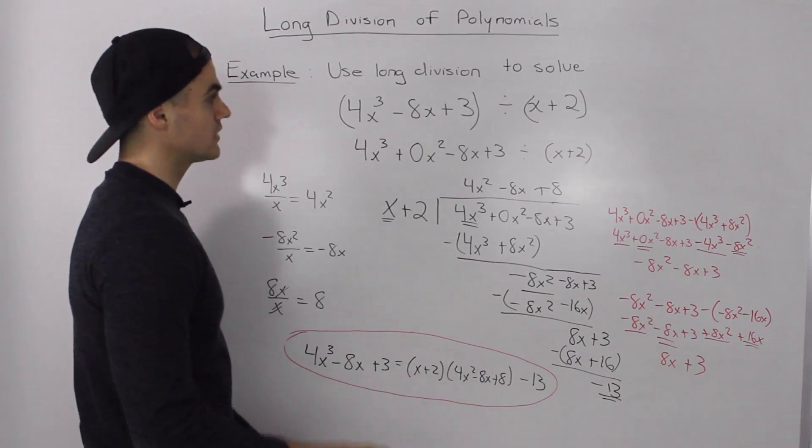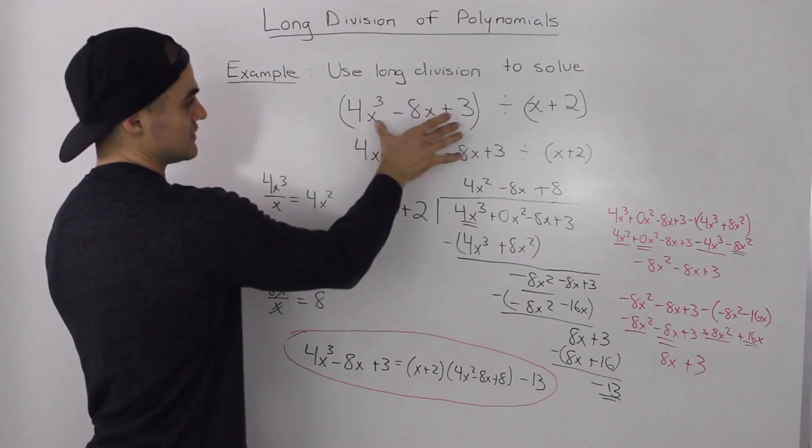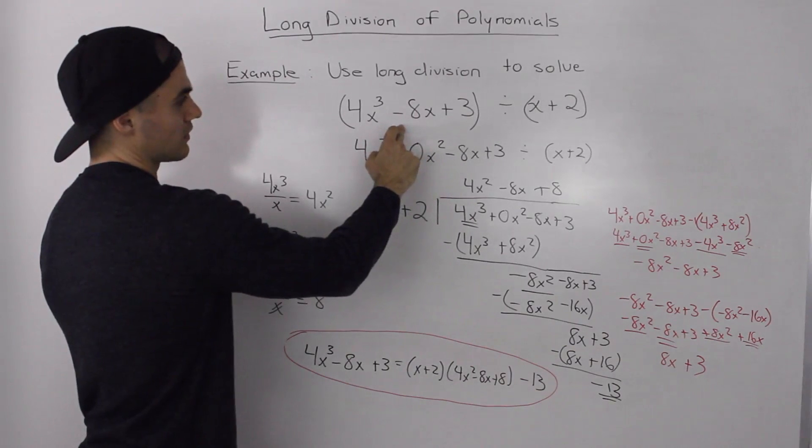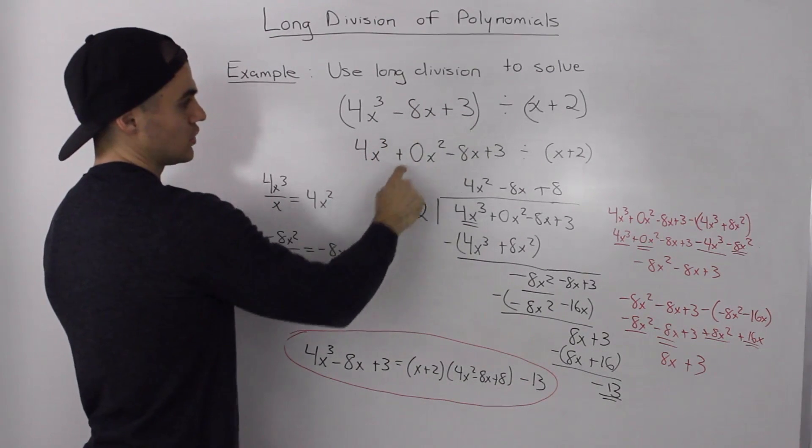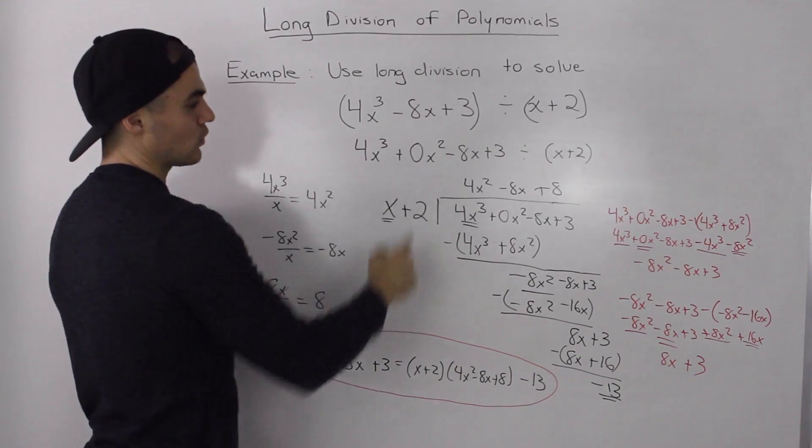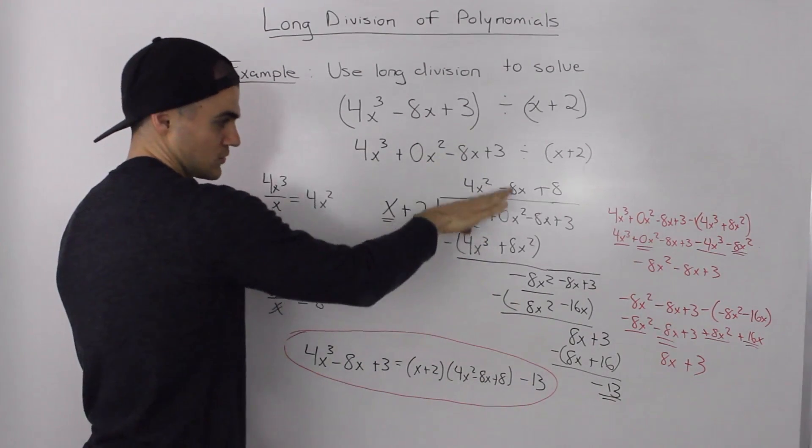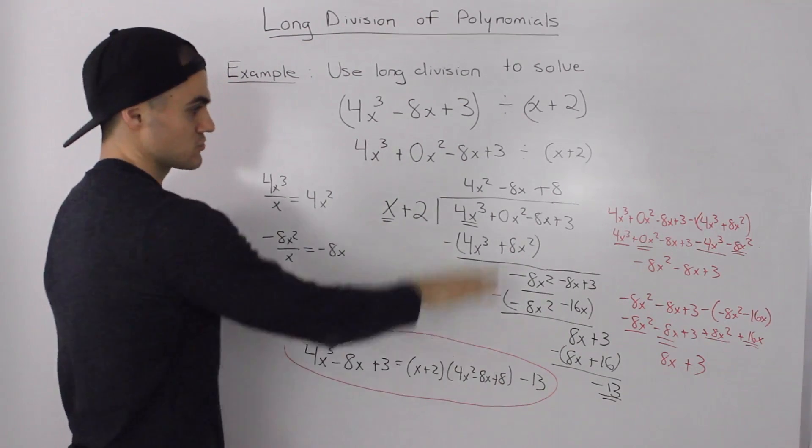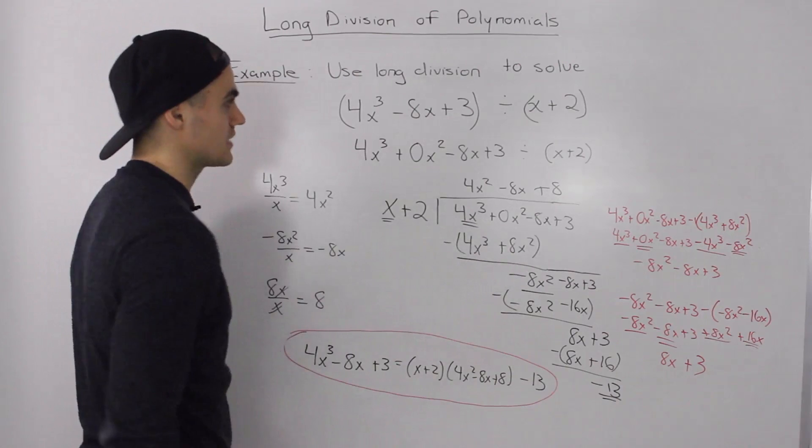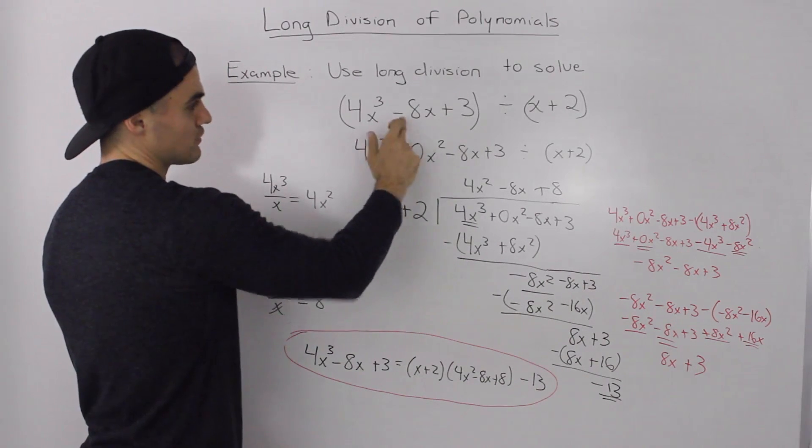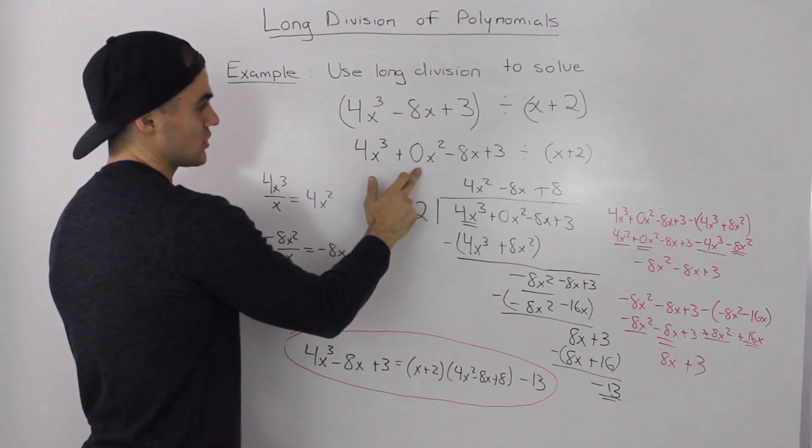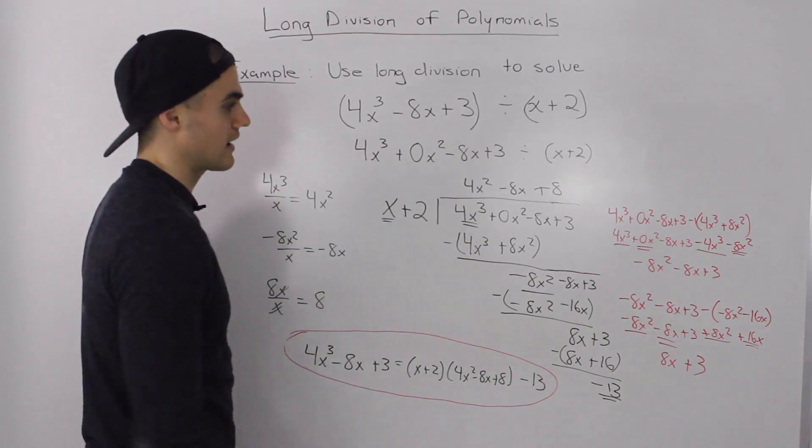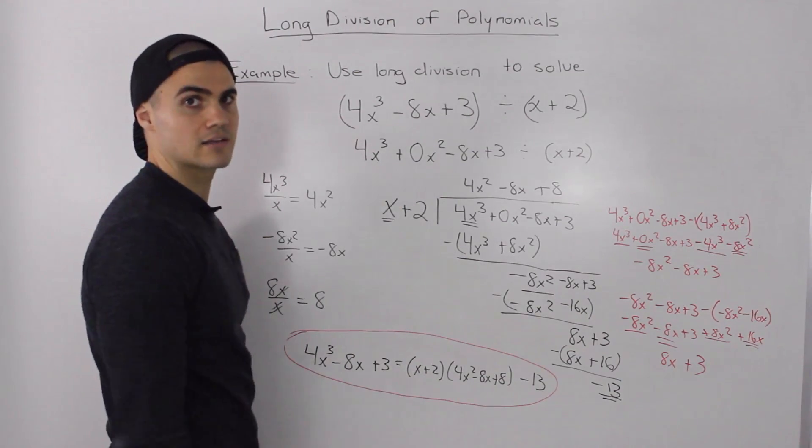So, as a recap, the trick in this question was that in the dividend, there was no term for x squared. And whenever there are any terms missing, you always want to add a leading coefficient of 0 and add that term in, so when you do the long division, the vertical subtraction is a lot smoother and it's a lot easier to see. So, in this case, there was an x squared missing from the dividend, so we put in this 0x squared. But, other than that, process is exactly the same.